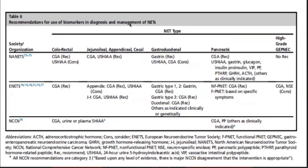The recommendation for use of biomarkers for diagnostic management — NANETS, North American Neuroendocrine Society, European, and NCCN all have given their guidelines. Commonly, chromogranin A and urine 5-hydroxyindoleacetic acid are used.